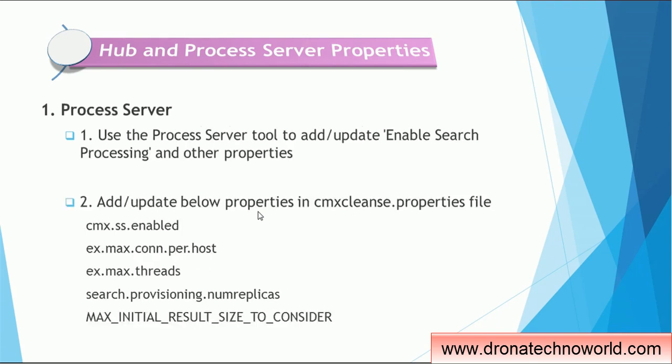Once we configure the hub server, we have to configure the process server for Elasticsearch. First, we go to the MDM hub and find the process server configuration. We have to add or update the enable search processing properties. The cmx.clean.properties file is also required to be updated for properties such as cmx.ss.enable, ex.max.connection.per.host, ex.max.threads, num.replicas.for.provisioning.search, and max.initial.result.size.to.consider. As with the hub server, process server properties also have specific explanations and default values in the configuration guide.